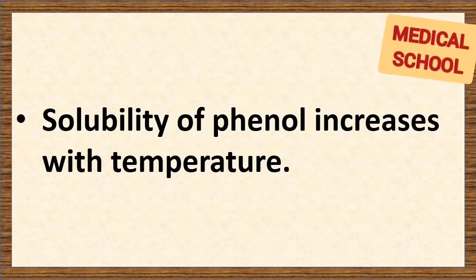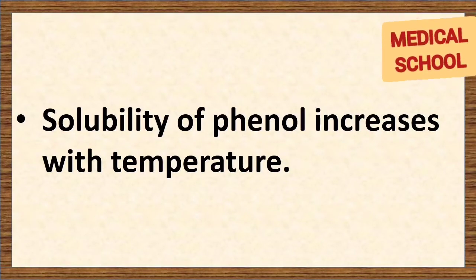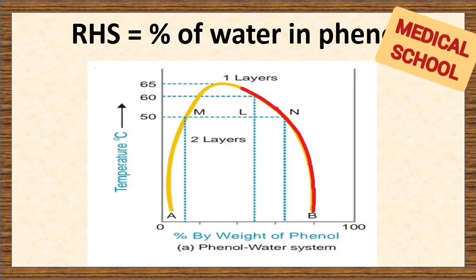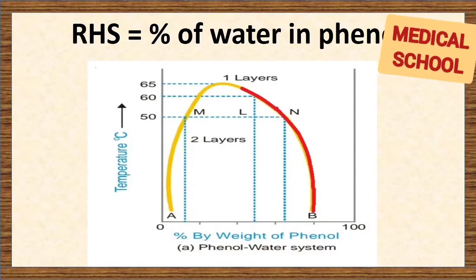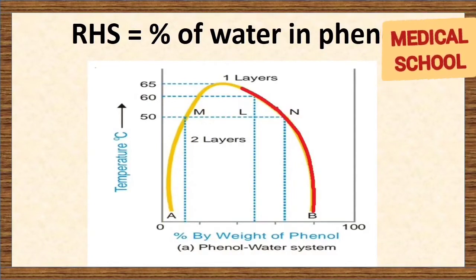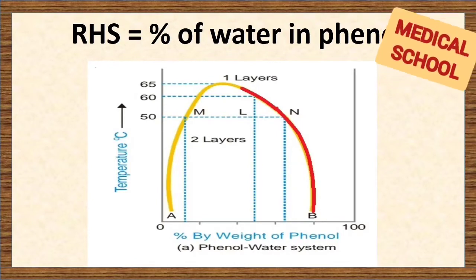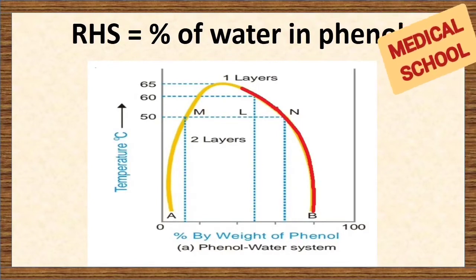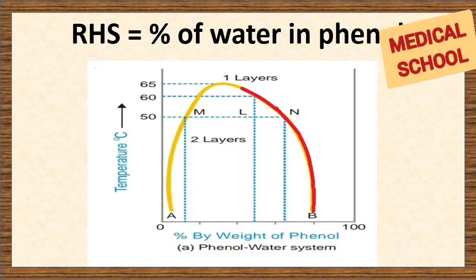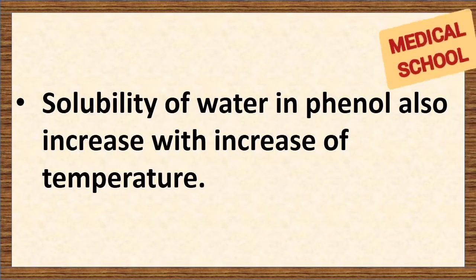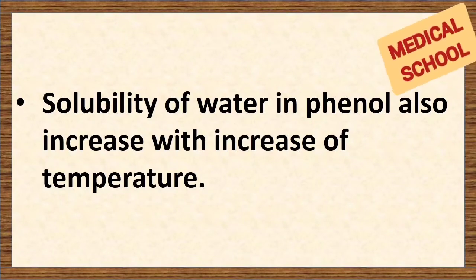The solubility of phenol increases with temperature. The right-hand side of the curve — again, see the red line — represents the other conjugate solution layer, giving the percentage of water in phenol. About conjugate solutions: when equal volumes of two liquids are shaken together, two layers are formed. These two solutions are referred to as conjugate solutions. The solubility of water in phenol also increases with increase of temperature.